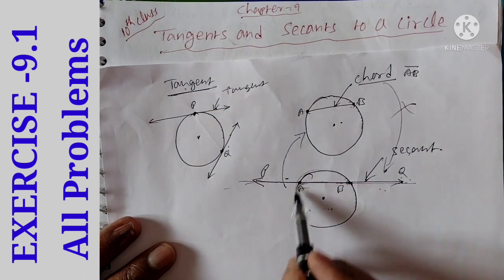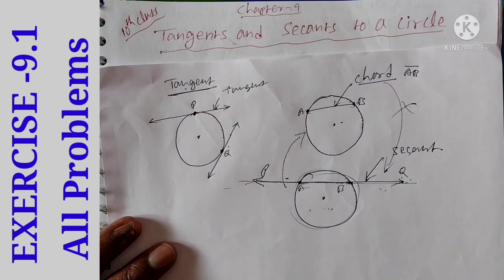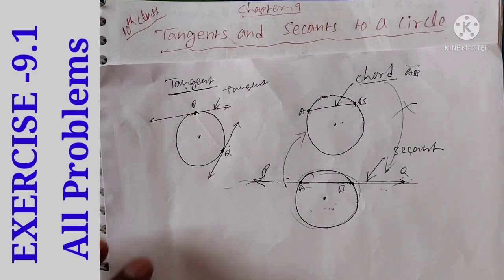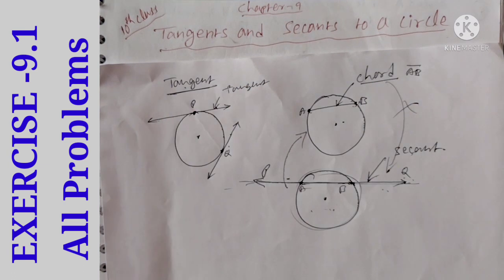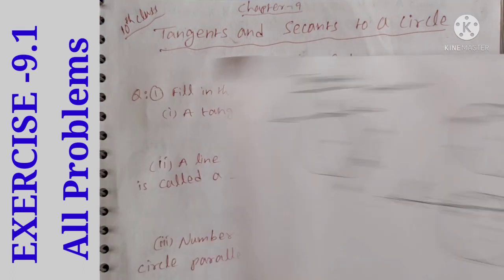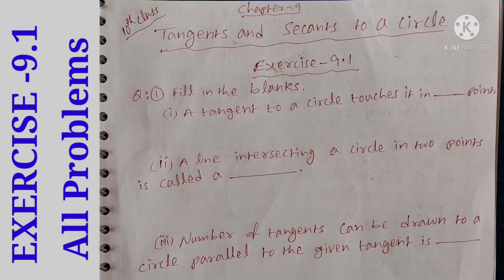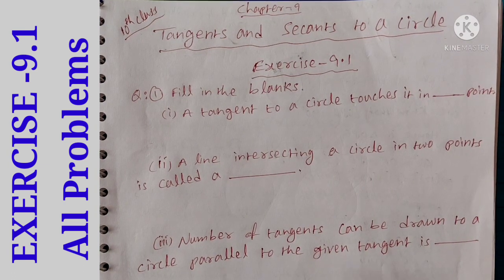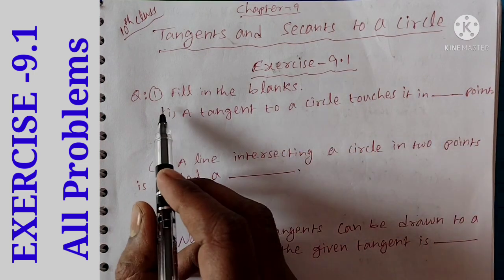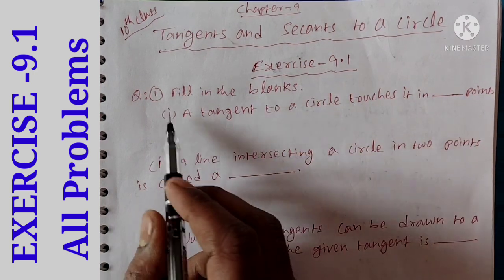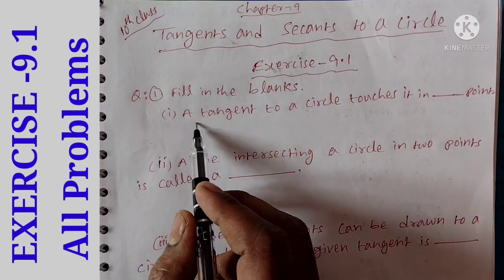So this is tangent and secant on the circle. Now in Exercise 9.1, fill in the blanks. First question.